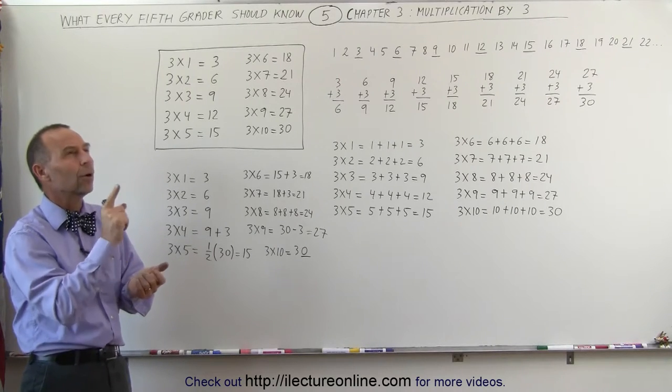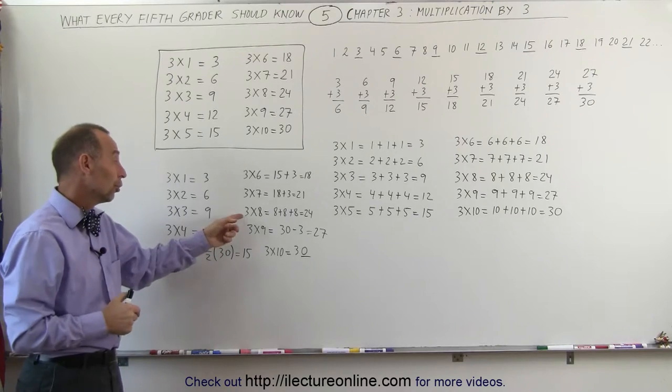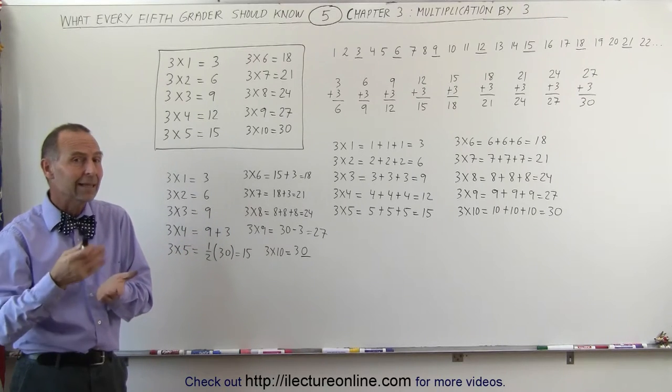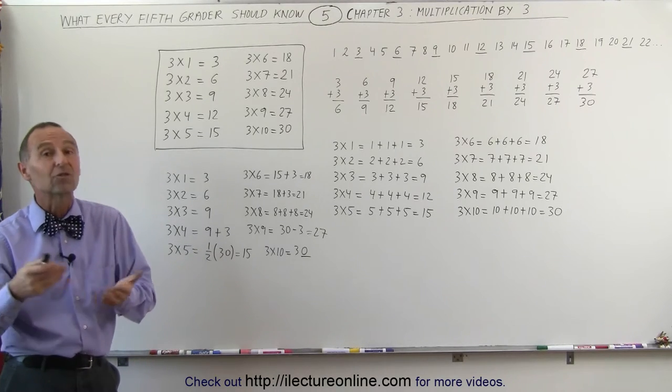3 times 9, what is that again? Oh, I know that's 3 times 10, and then take away 3. You can also think about 3 times 8 as being 3 times 10, and take away 2 times 3, which would be 30 minus 6, which is 24.